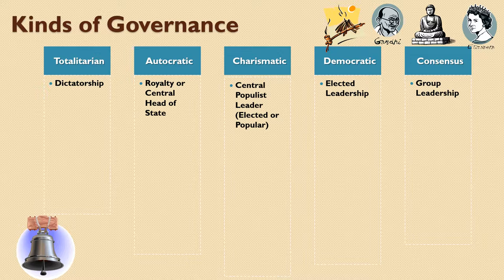A good example of consensus governance is juries. When a jury goes to deliberate on a verdict, they have to all agree for that verdict to stand. So consensus requires a unanimous vote or something close to it.